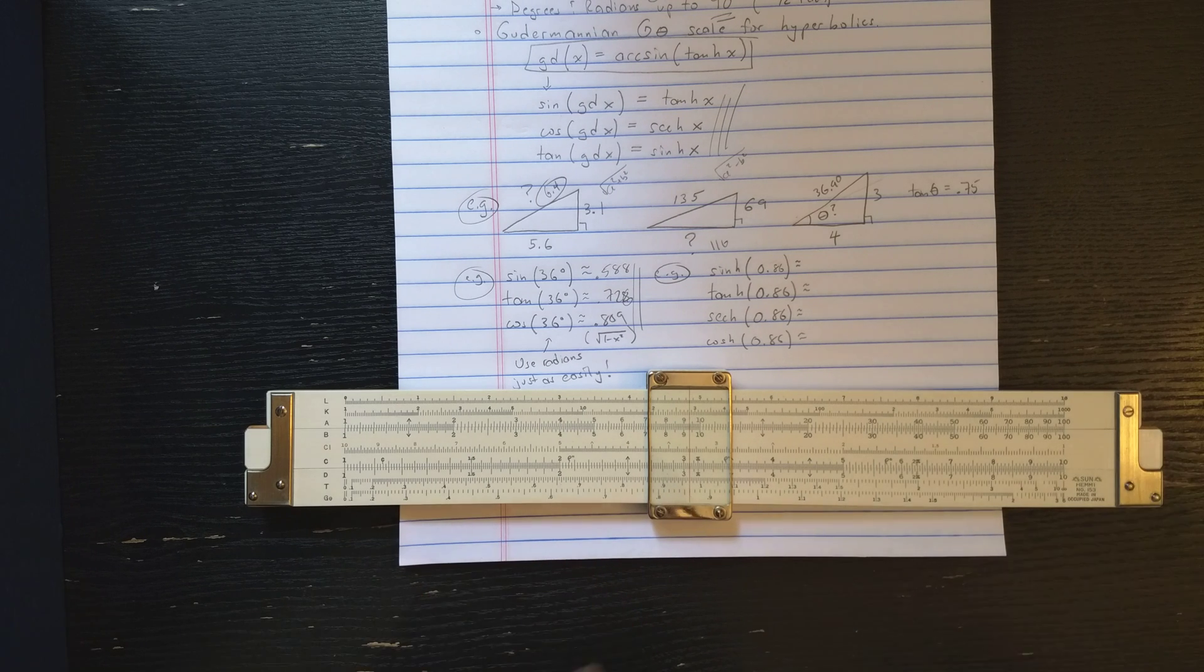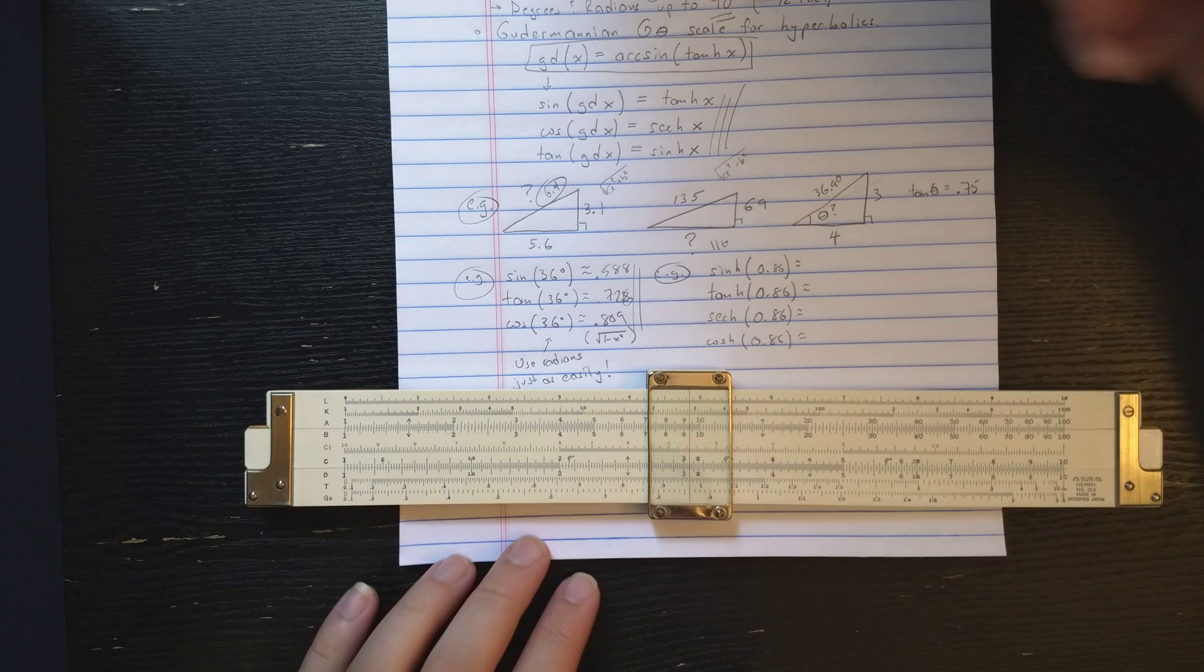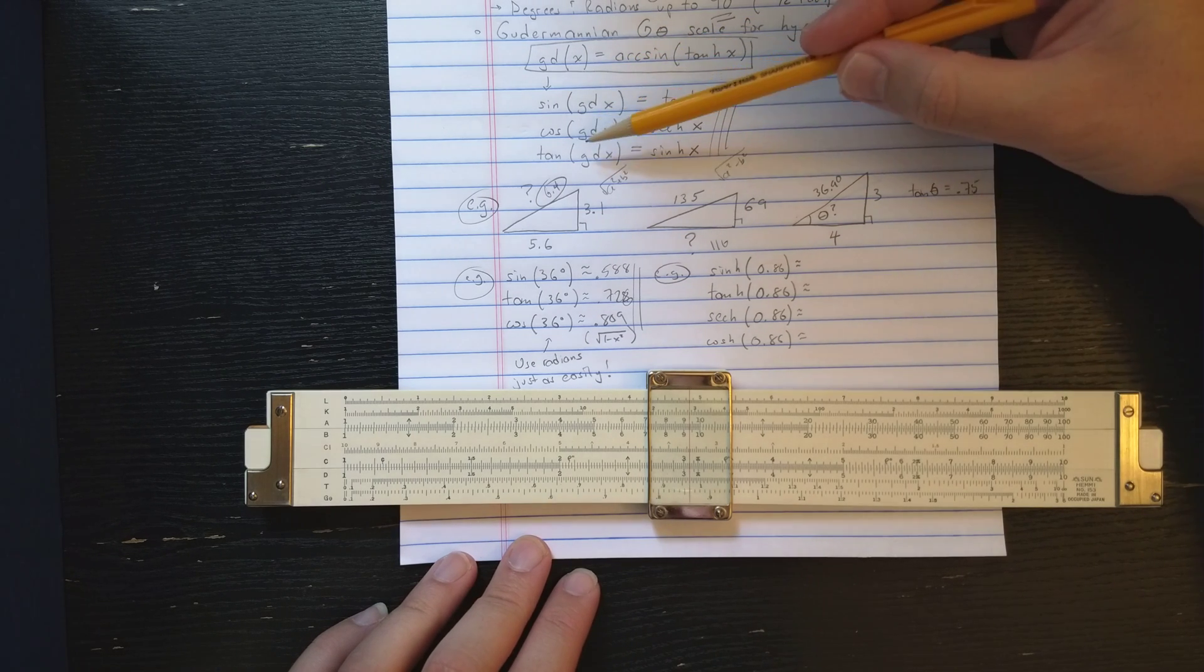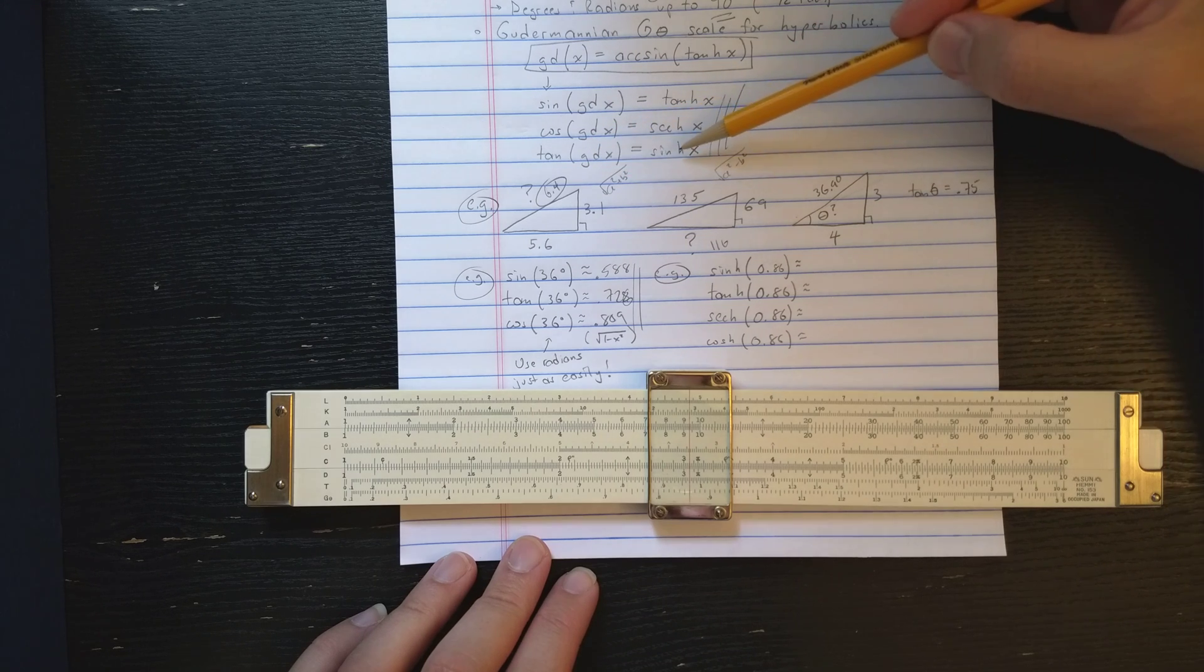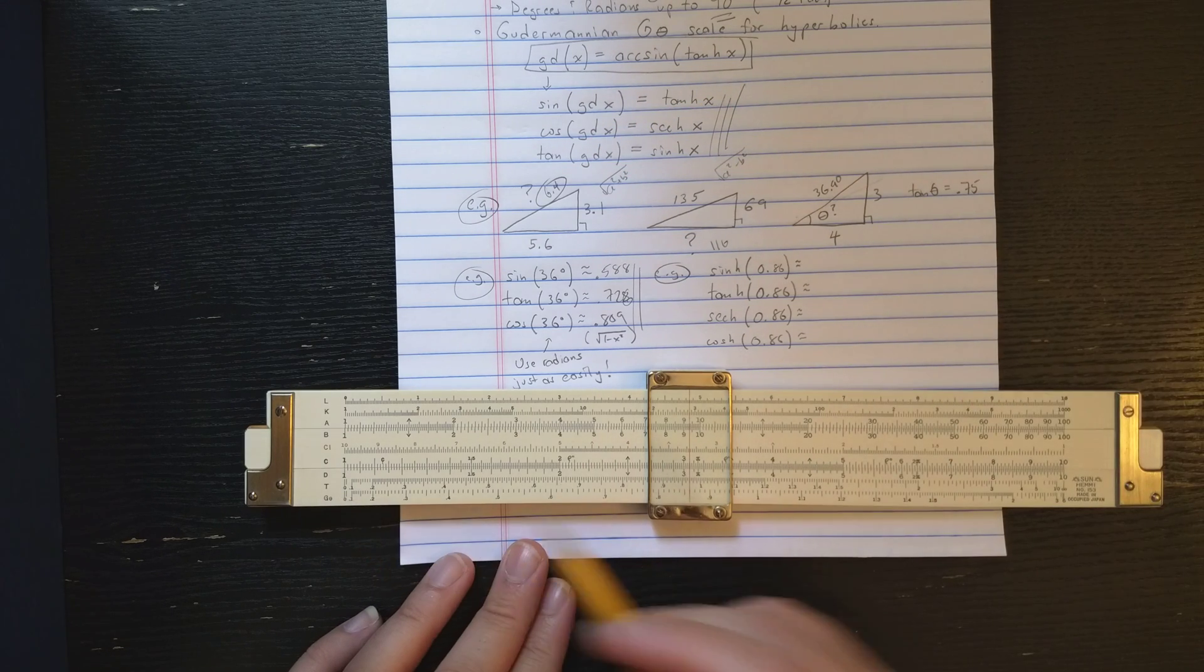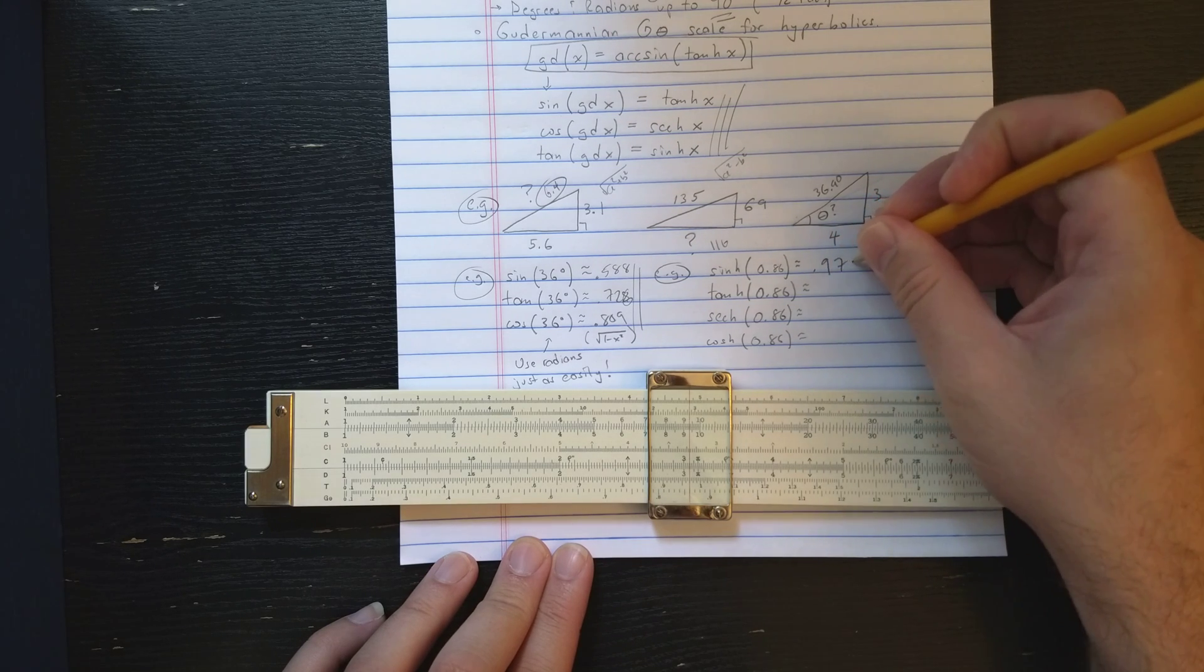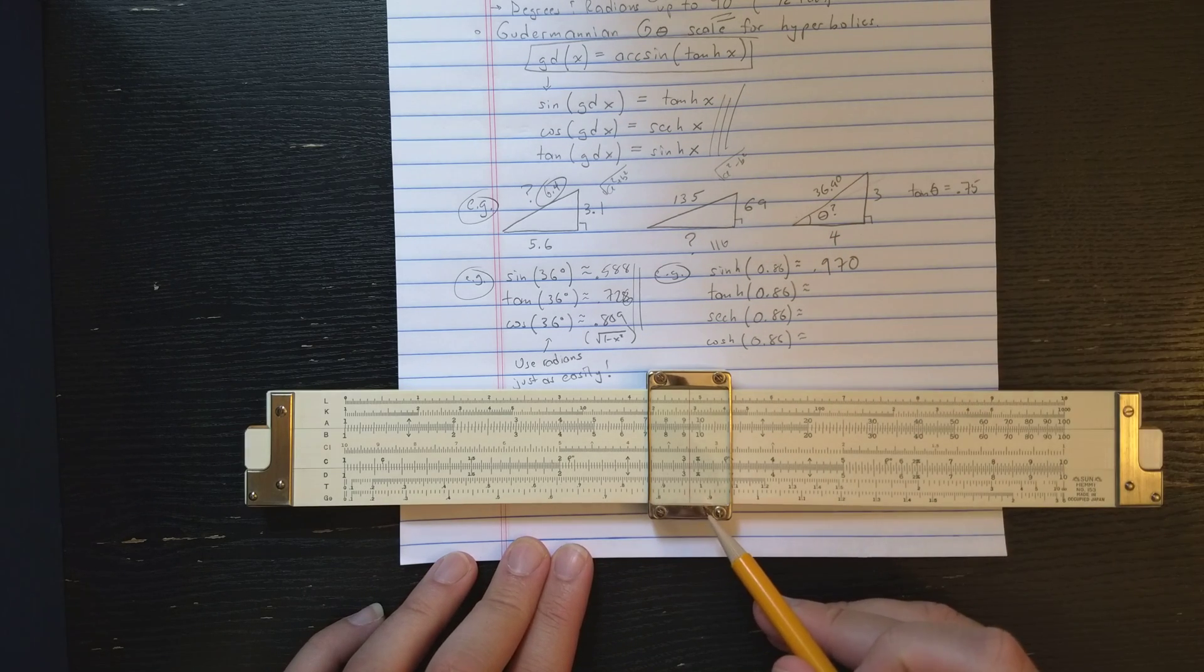Now, the trick to remembering how it should work is that sine and tangents essentially swap. So the sine of the Gudermanian is tanh x, but the tangent of the Gudermanian is sinh x. So on the tangent scale here, I read 0.97, but that's actually sinh x.